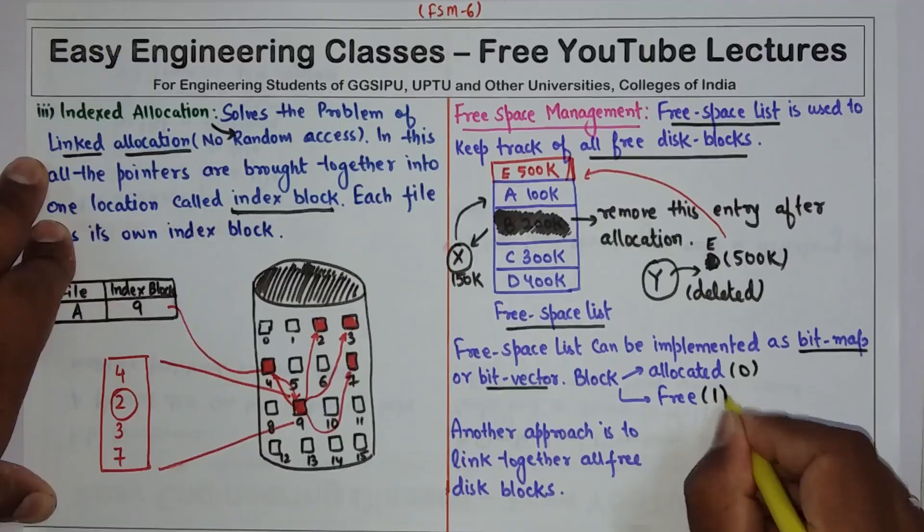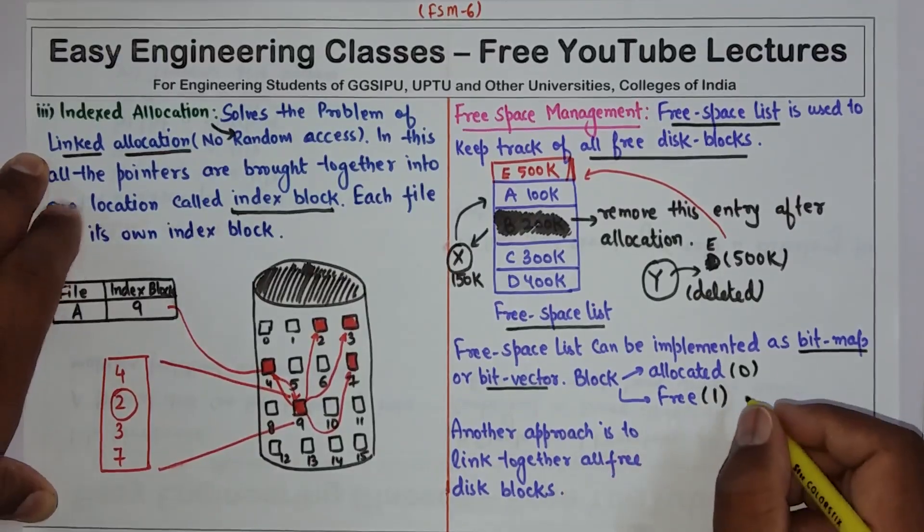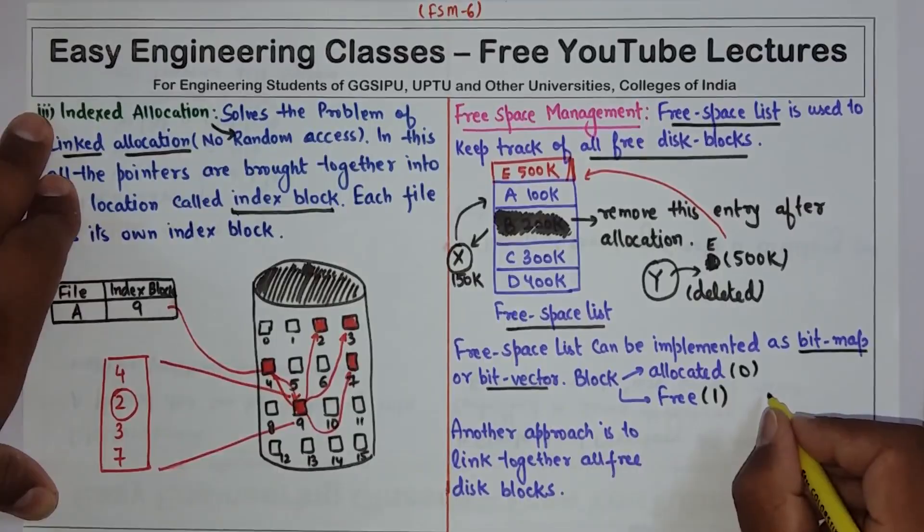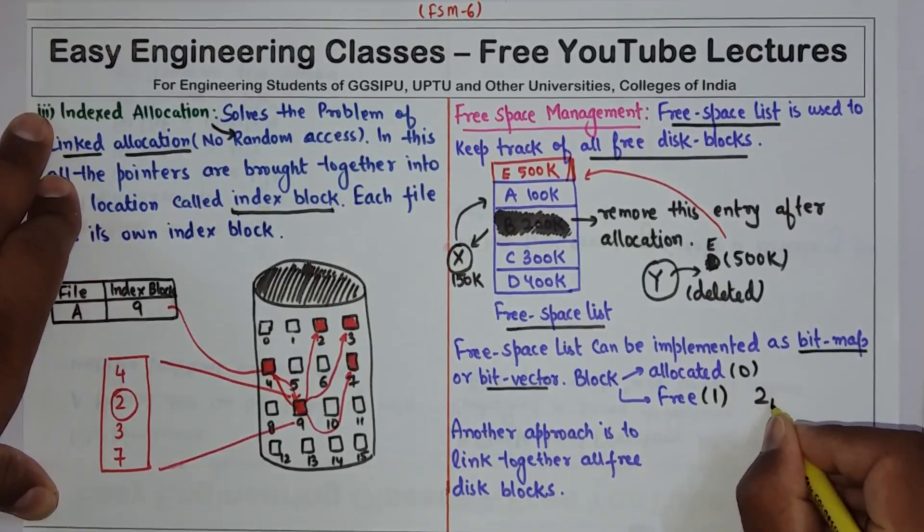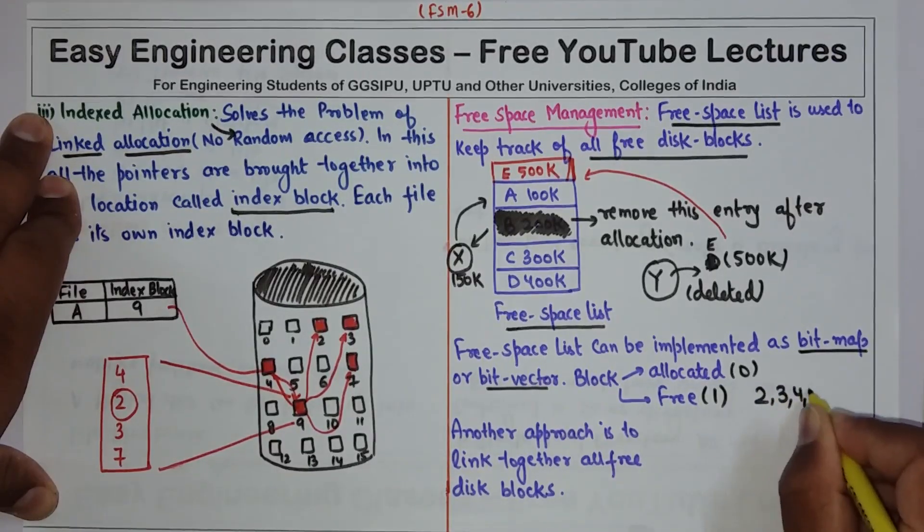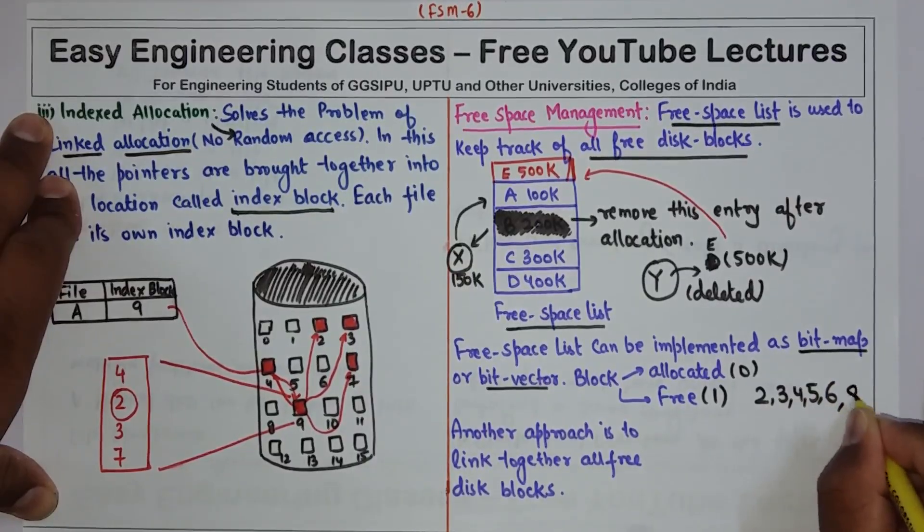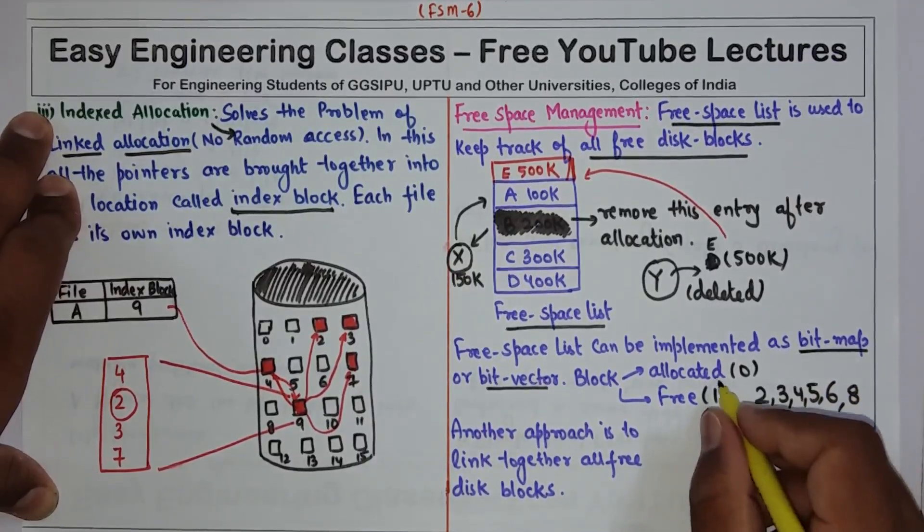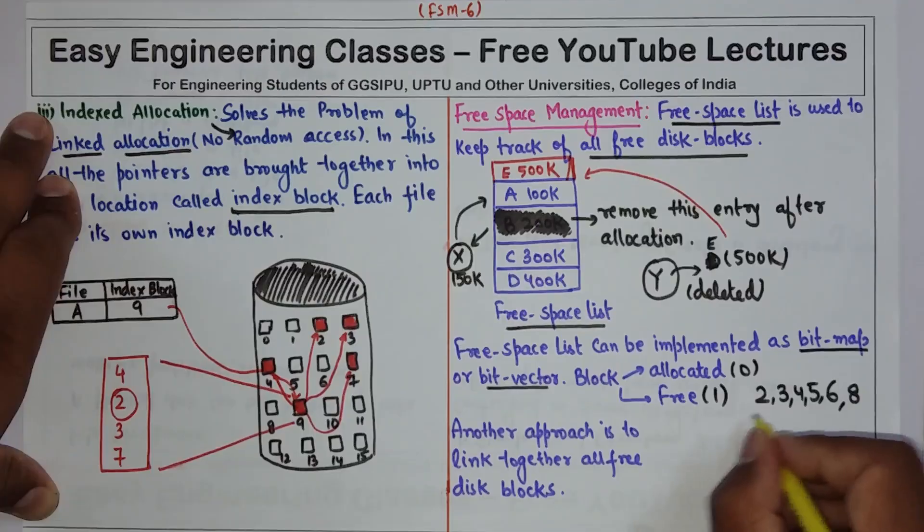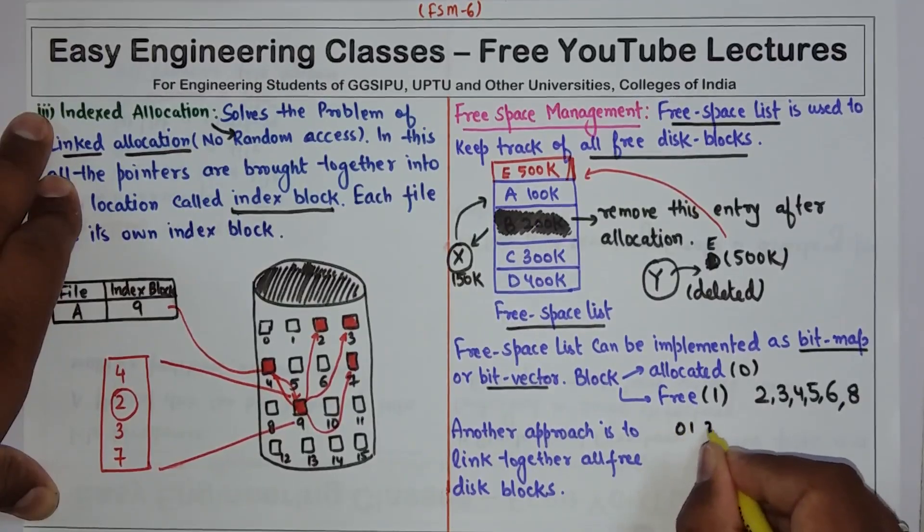For example, let us consider a disk in which these blocks are allocated. So these blocks are allocated, so how will I represent it in the form of 0 1?